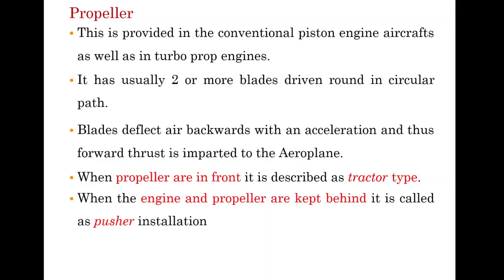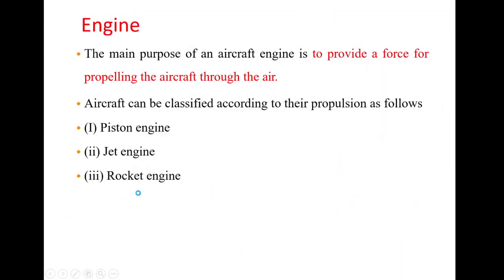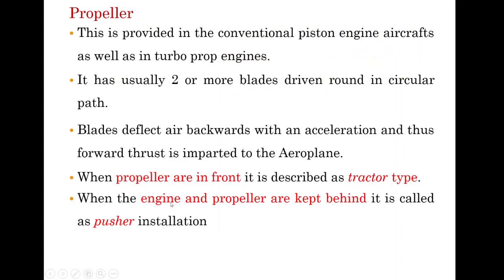When the propellers are at the front of the aircraft, it is called the tractor type. When the engine and the propeller are kept behind, it is called a pusher installation. So there are two types of propeller configurations: the tractor type, where propellers are at the front, and the pusher type, where both the propeller and engine are kept behind.